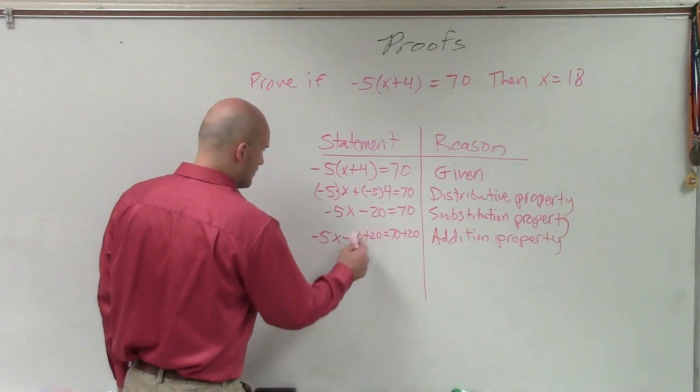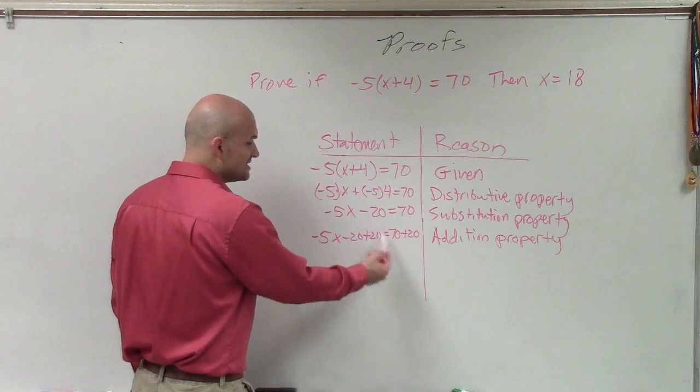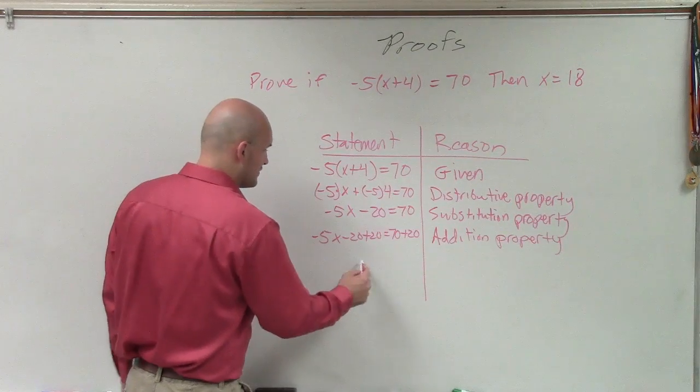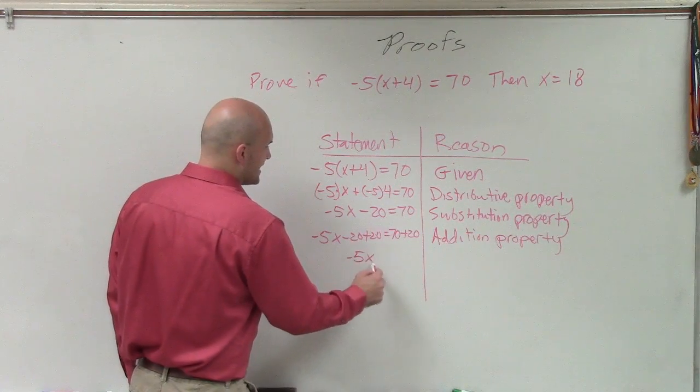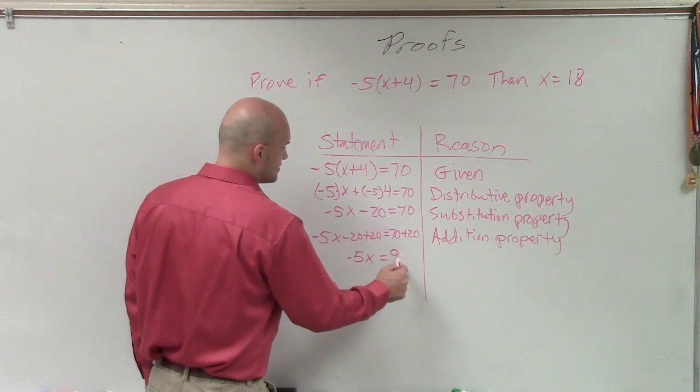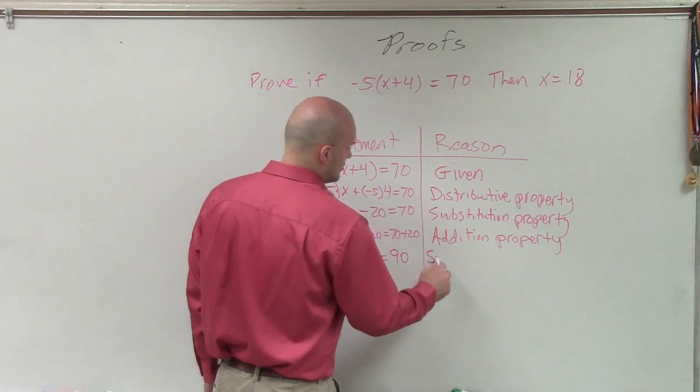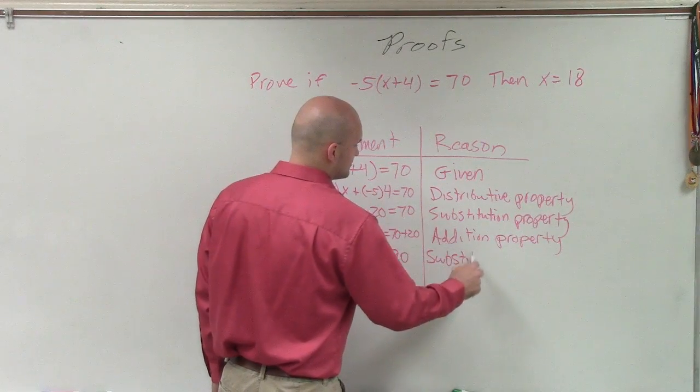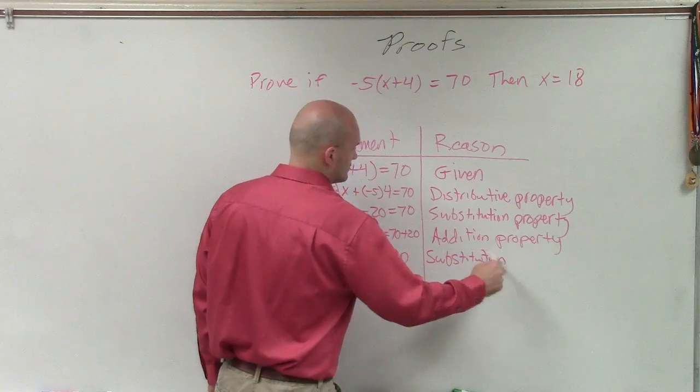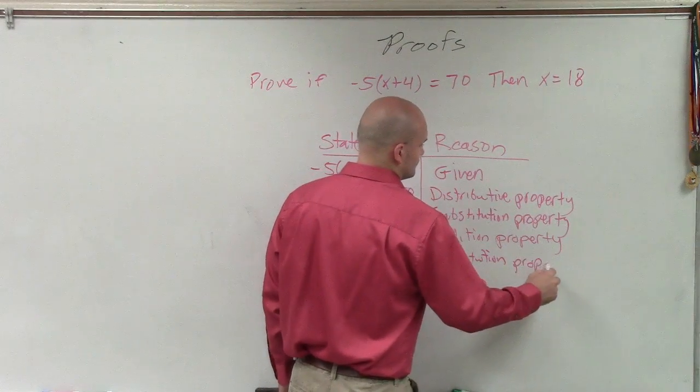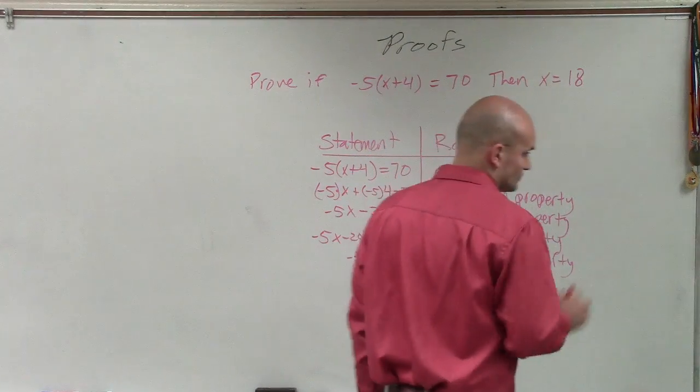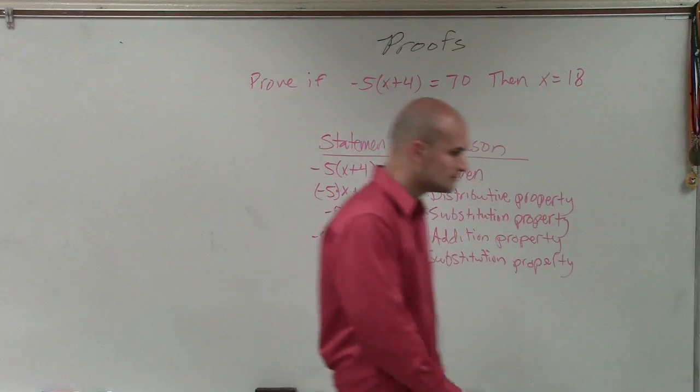So therefore, now we can simplify again. So therefore, that adds, because these are additive inverses. So therefore, that just leaves us with negative 5x equals 90, which is, again, your substitution.